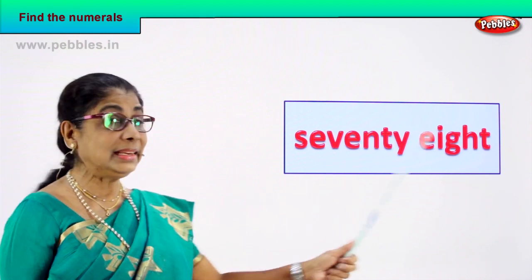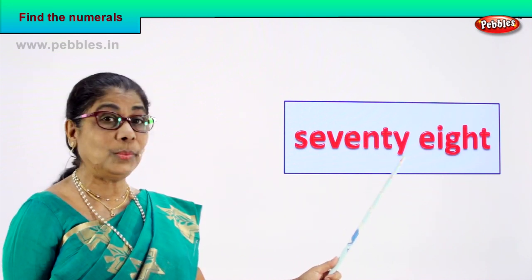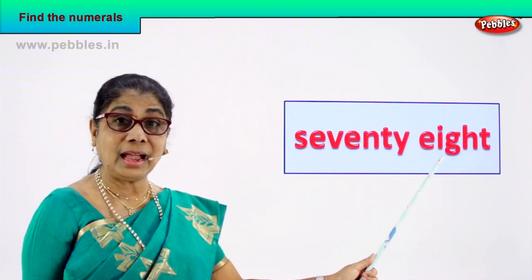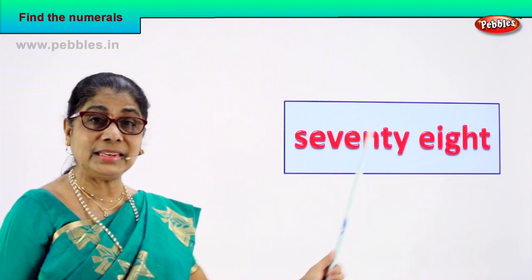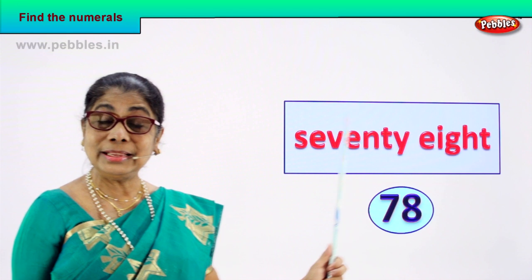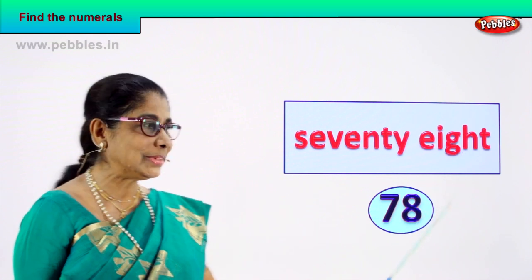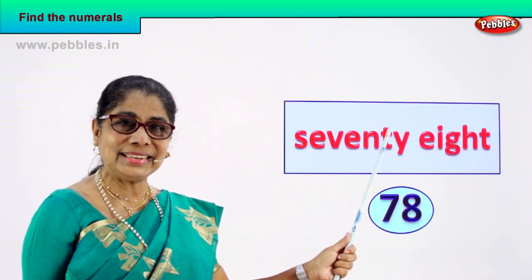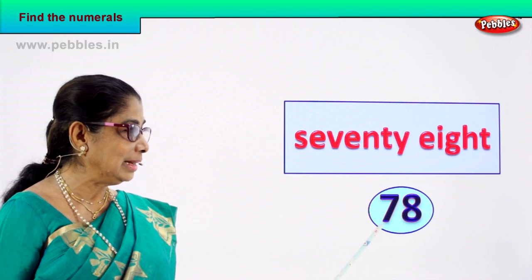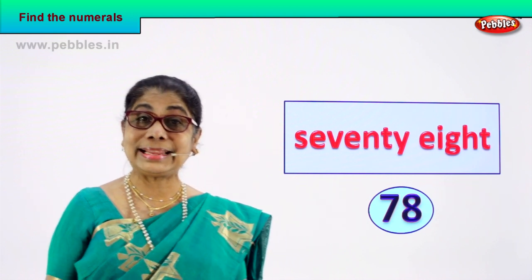Let's take another number name. S-E-V-E-N-T-Y, 70. E-I-G-H-T, 8. Seventy-eight, 78. How do we write the numeral? Seven and eight — 78. You learn the spelling and you learn to write down the numeral.